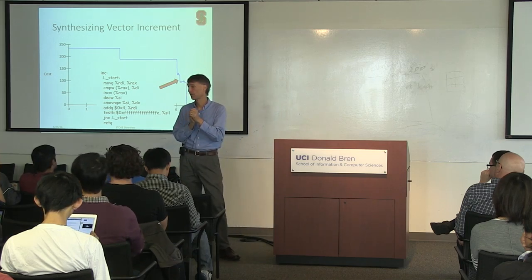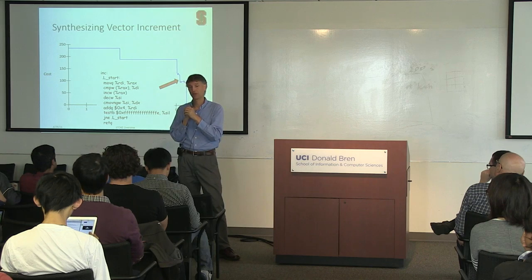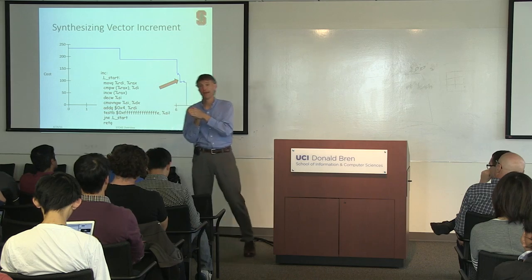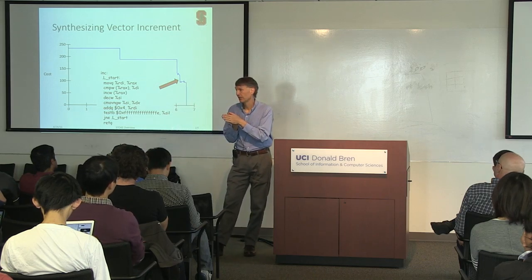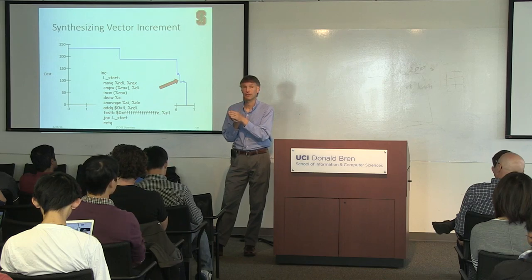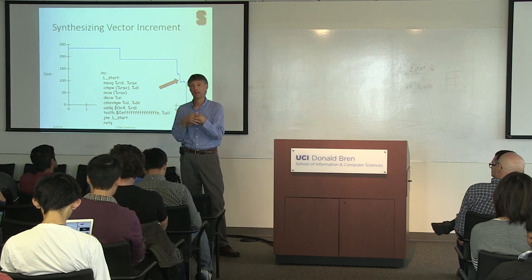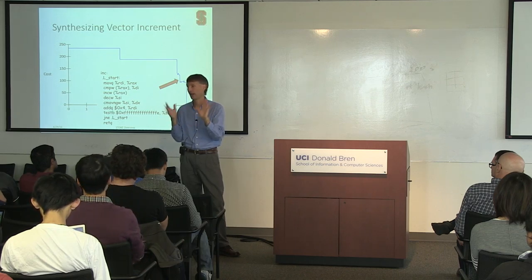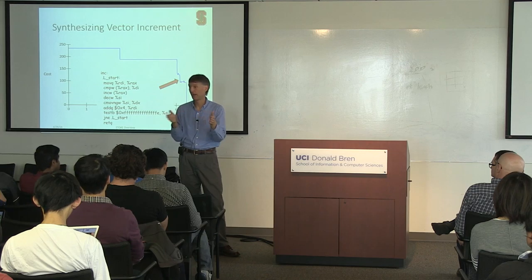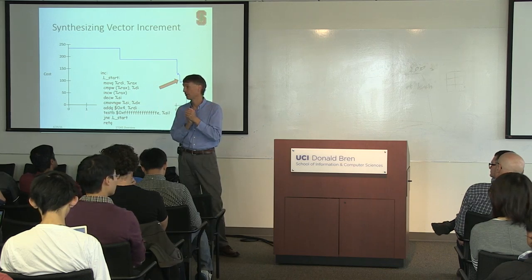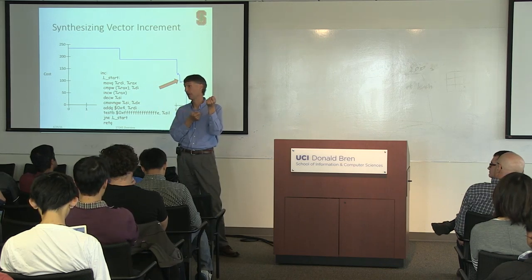This approach assumes sequential deterministic programming. The cost function can be anything you want, though. For floating point, you might have a cost function that doesn't care about bit-accurate results — only relative error within half a percent — and it'll find programs that give up a little precision but are much faster. If you can relax the notion of correctness a little, you can do things no compiler could ever do.